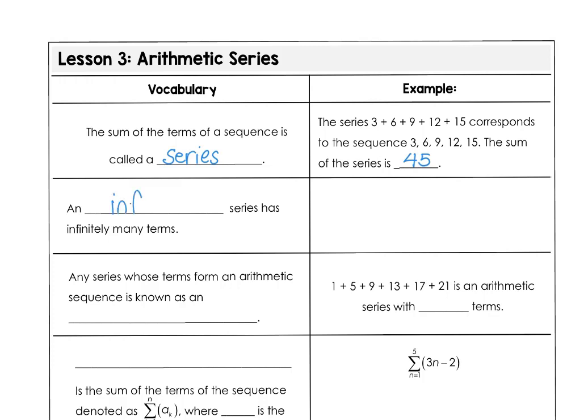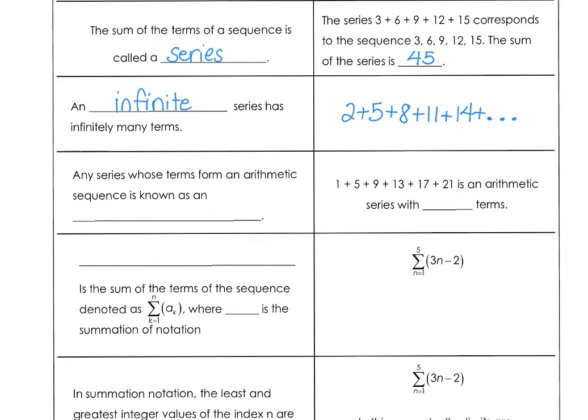An infinite series has infinitely many terms and we can denote that infinite series with the ellipsis, the three dots. Any series whose terms form an arithmetic sequence is known as an arithmetic series. In our example, you can see 1 + 5 + 9 + 13 + 17 + 21 is an arithmetic series and it has 6 terms.